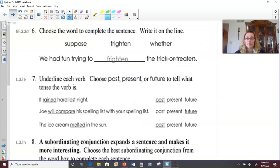Over to number six. Choose the word to complete the sentence. Write it on the line. We have the words suppose, frighten, and weather. Not the weather like outside, but like whether or not you're going to complete all of your work. So we had fun trying to frighten the trick-or-treaters. That doesn't make sense with suppose or weather. And a clue would be, you know, trick-or-treaters. Just from your own experience, you know that sometimes you might try to scare others at Halloween time.